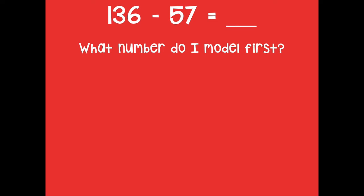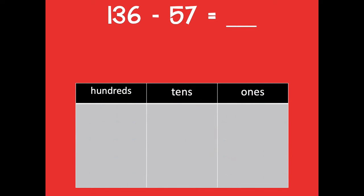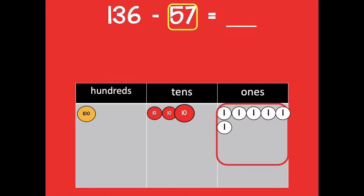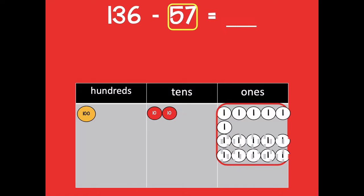We need to start with: what number do I model first? It's 136 — always the largest number when we're subtracting. So 100, three tens, and six ones. Now I look at my ones to see if I need to do any unbundling. In 57 there are seven ones that I'm subtracting and I only have six, so I need to go to the tens place and decompose that 10 into 10 ones. Now I have enough ones to subtract.